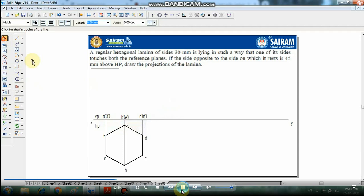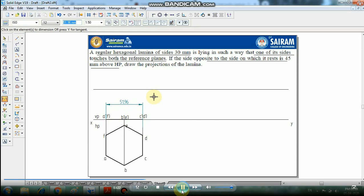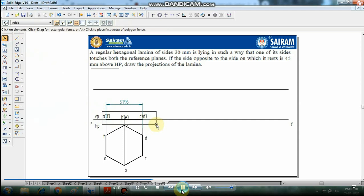The side opposite to the resting side is 45 mm above HP. First, let me make it using the offset command. We can make a line, copy the reference line 45 mm above the reference line. Now what is the distance between the two edges in the front view? We have to see it is 51.96.